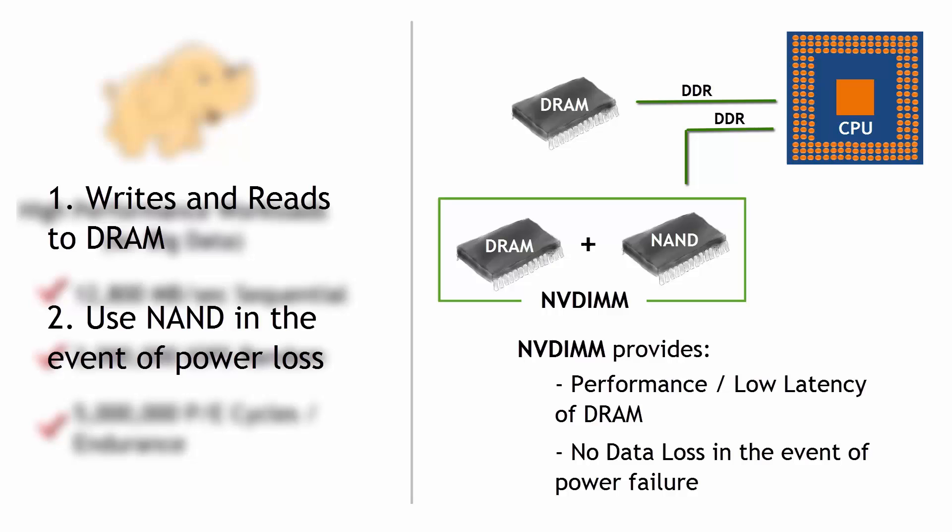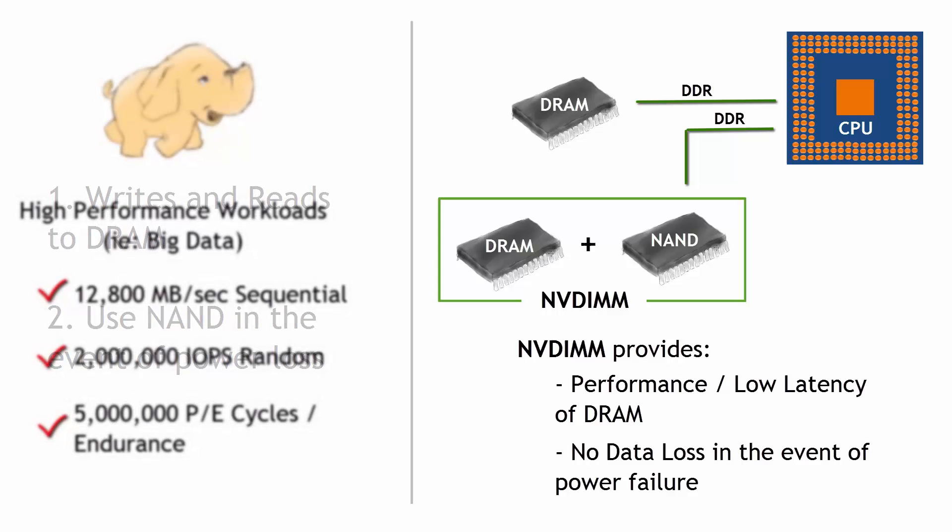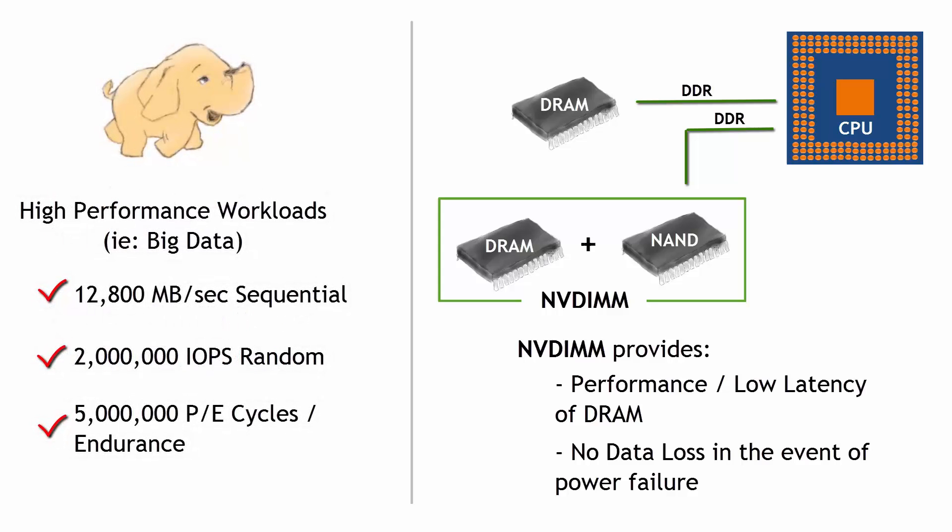Now, depending upon your workload and the size of the data, you're going to be using both of those together, but you want to make sure that you push all that you can — the reads and writes and performance — over to DRAM because you're going to get the best performance. Then just have that NAND available in the event of power loss. It can flush out what's on DRAM, pop it over to NAND. And then as the server boots again, it recognizes that the NAND is there and that data had been flushed from DRAM, and it repopulates and everything is back to normal.